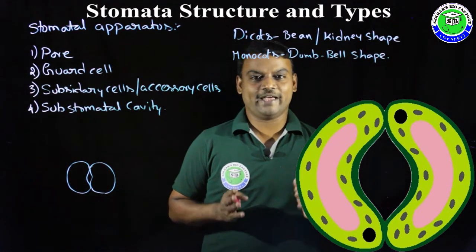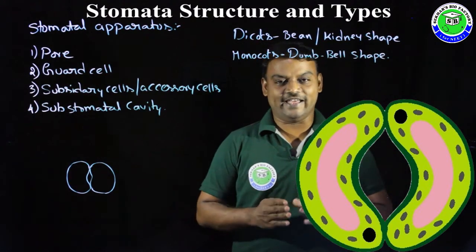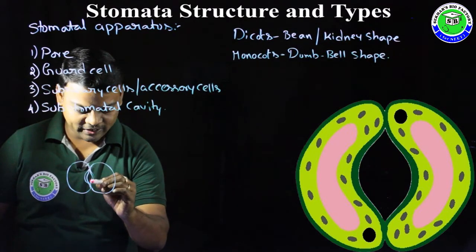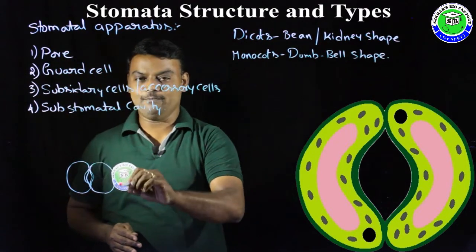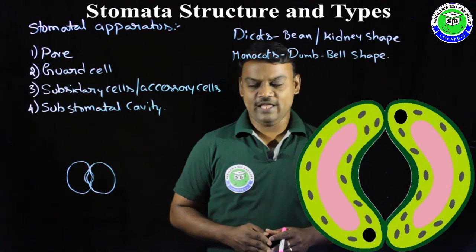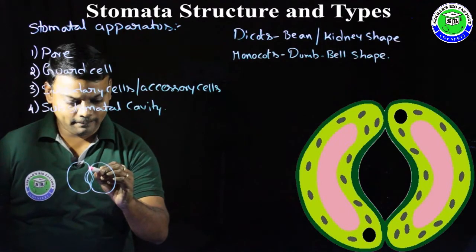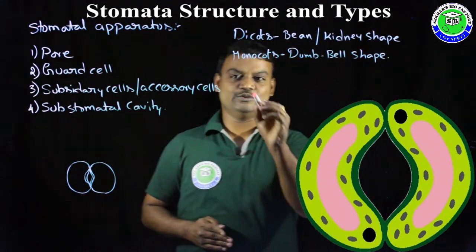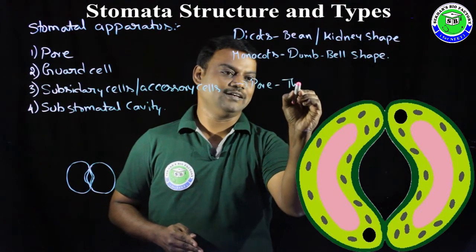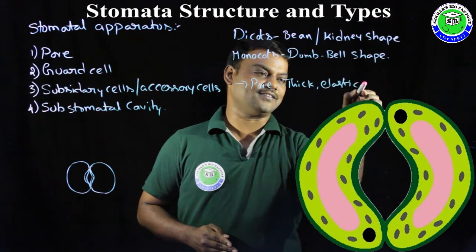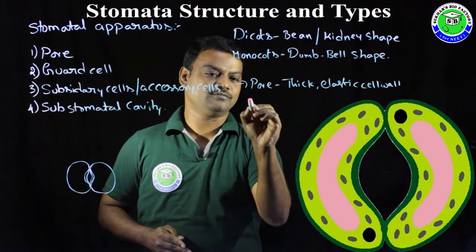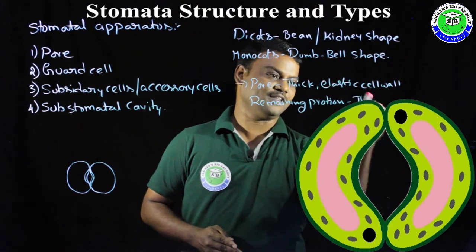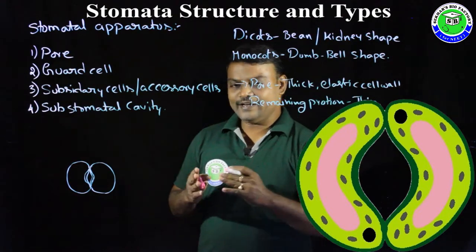These guard cells have a specialized cell wall structure. The cell wall of each guard cell has unequal thickness: the cell wall present towards the pore is very thick and elastic in nature, while the remaining portion of the cell wall is thin and non-elastic. Because of this thick and elastic cell wall towards the pore, it facilitates the opening and closing of stomata.